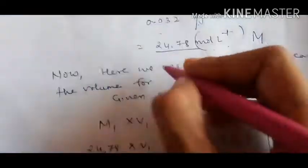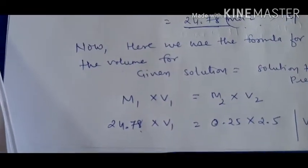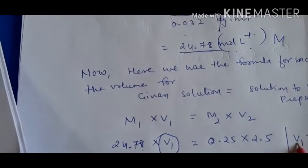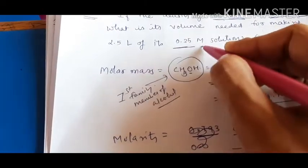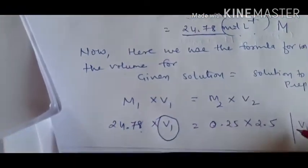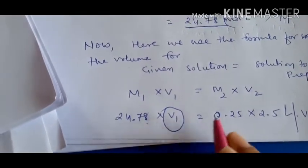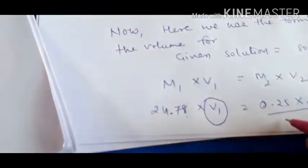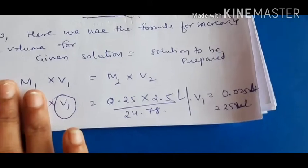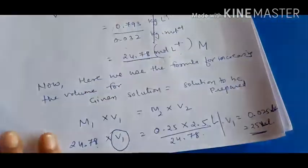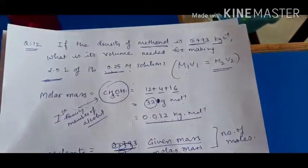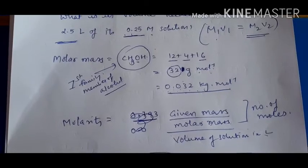So the first solution already prepared has molarity M₁ = 24.78 mol/L. We need to prepare M₂ = 0.25 molar solution of volume V₂ = 2.5 litres. Applying M₁V₁ = M₂V₂ and solving for V₁: V₁ = M₂V₂ / M₁. Inserting values gives V₁ ≈ 25.07 mL.